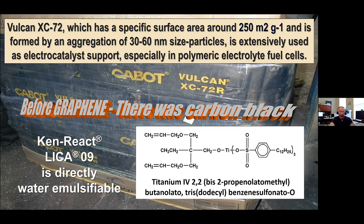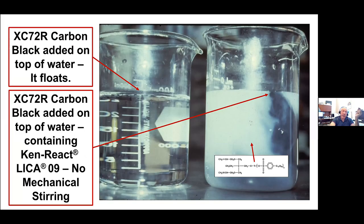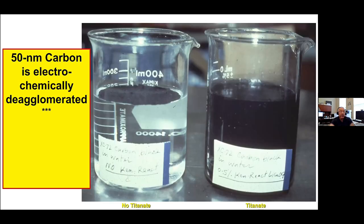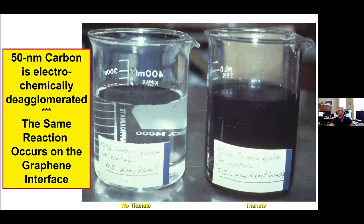We found that Kearic Glycol-9 — a neopentyl dioxy, tri(dodecyl) benzene sulfonyl titanate — is the only one we have that's directly water-emulsifiable. So we tested what would happen if we put the Lyco-9 into the water and then added the conductive carbon black. The left-hand beaker shows carbon black sitting on water because they don't mix. On the right is the reaction at the interface with the Lyco-9 already dispersed in water attacking the surface of the carbon black. It's the same process you're going to do with graphene — put the coupling agent into the organic or water phase first, then bring in the graphene uniformly. Look at the reaction that takes place with no mechanical stirring — the titanate totally deagglomerates the carbon.